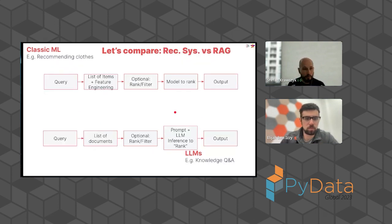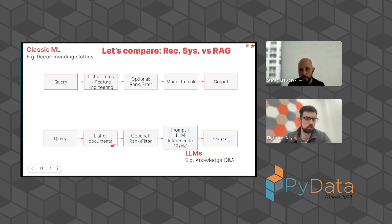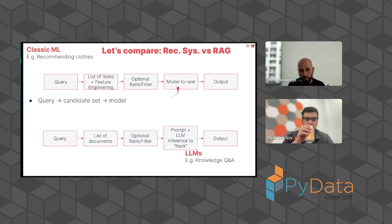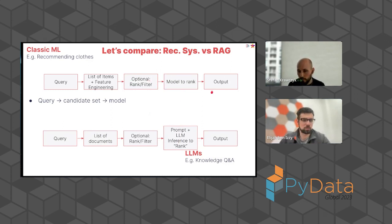Just to compare something more complex: a recommendation system versus a retrieval augmented generation system. At Stitch Fix they were recommending clothes with a recommendation system; with LLMs you might be doing a knowledge question answering use case. Both look pretty similar in structure. Both have some sort of query that you get a candidate set for. In the recommendation case you rank and feature engineer items; in RAG you take some text, get an embedding, find similar documents, potentially rank and filter them, then pass to a model. In the classic case the model re-ranks items; in an LLM you're providing that as input and the LLM figures out what to use to provide an output.